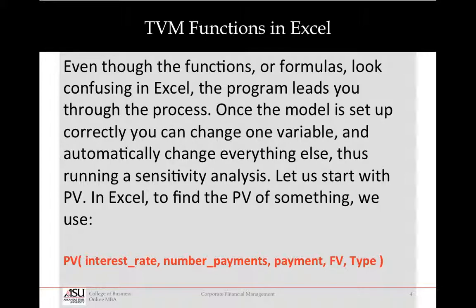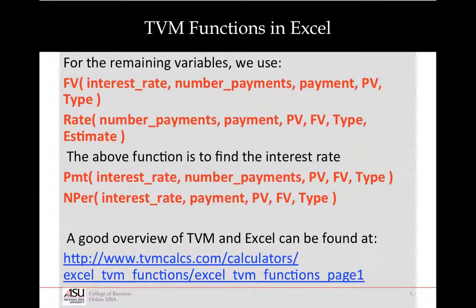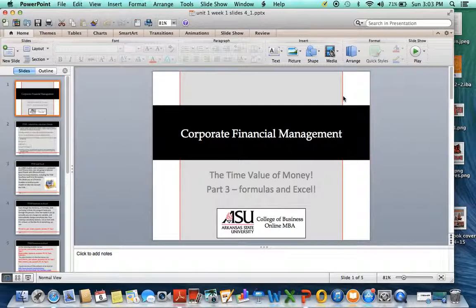We'll talk more about this when we're actually in class doing real-life person-to-person lectures. The remaining variables: there's a future value one, rate is how you find interest rate, PMT is how you find the payment amount, and NPER is how you find the number of periods. There's a very good overview of time value of money in Excel at the link I have here — last time I checked the link was still good, hopefully it hasn't been taken away. I want you to be fairly familiar with Excel. By the end of this term you're going to be quite skilled at it, or you're going to be suffering mightily in the class. That's our next-to-last lecture — we'll have one more small lecture and then we'll be ready for class come Thursday night.